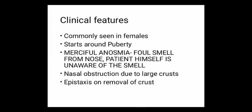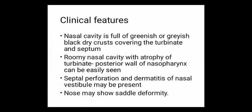Clinical features: it is commonly seen in females. It starts around puberty and there is merciful anosmia. There is a foul smell from the nose, but the patient himself is unaware of the smell. Nasal obstruction is due to large crusts. Epistaxis occurs on removal of crust. The nasal cavity is full of greenish or greyish-black crusts covering the turbinate and septum. The roomy nasal cavity with atrophy of turbinate and posterior wall of nasopharynx can be easily seen due to atrophic turbinate bones.